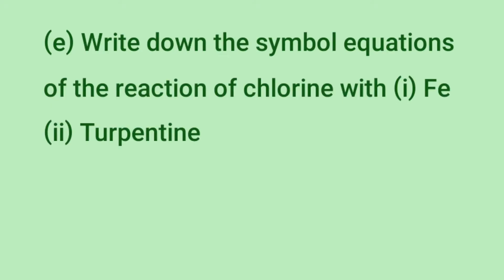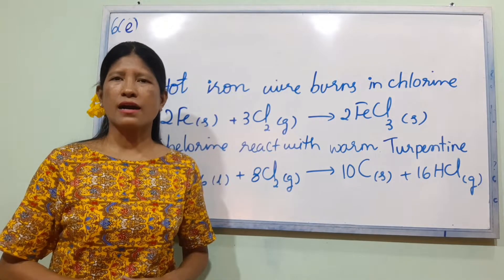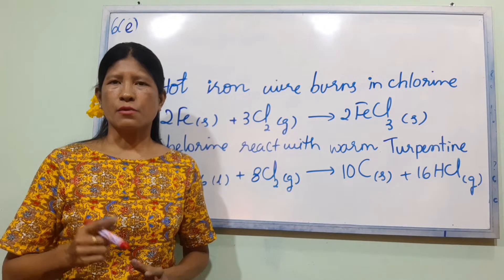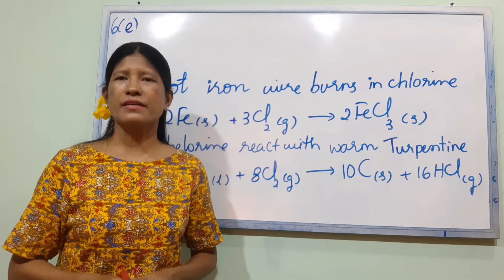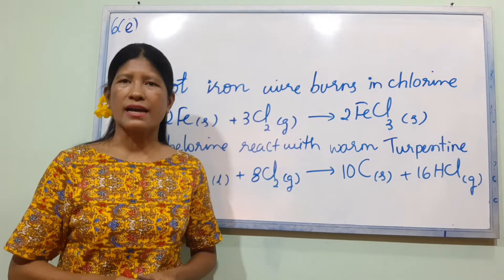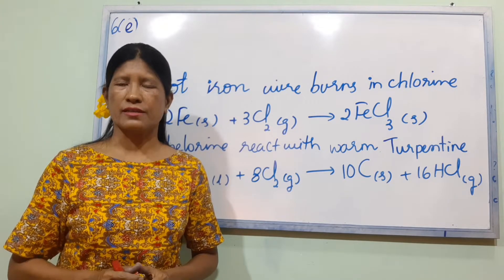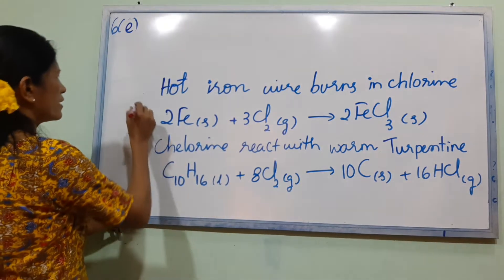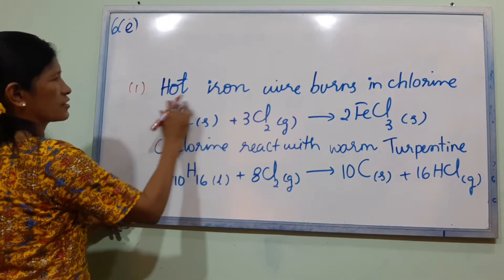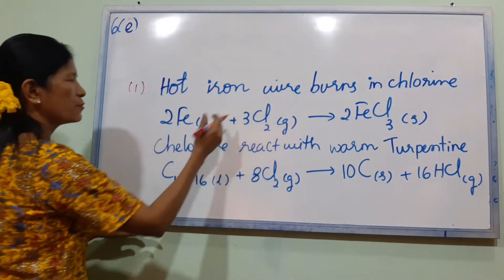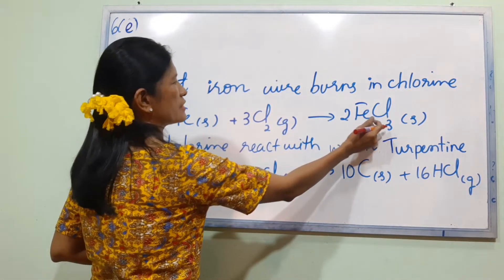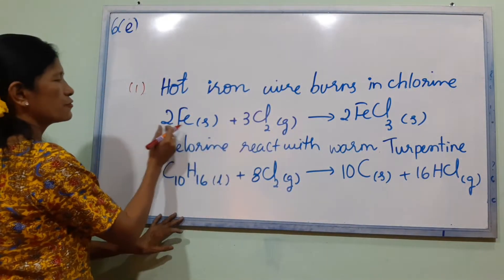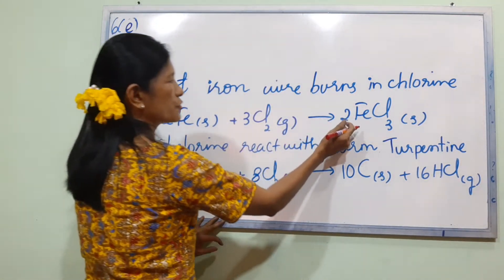Number E: Write down the balanced equations of the reaction of chlorine. Number 1: hot iron wire reacts with chlorine. The answer is 2Fe + 3Cl2 → 2FeCl3. Number 2: reaction of chlorine with a hydrocarbon, C10H16 + excess Cl2 → 10C + 16HCl.